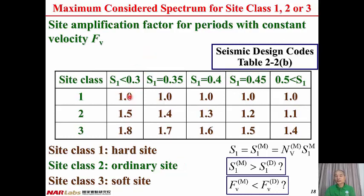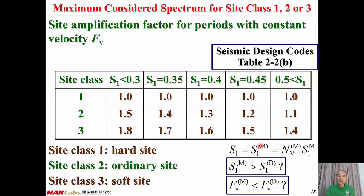From seismic design code Table 2-2B, once we have S1 and the site classification, we can find FV, the site amplification factor for periods with constant velocity. S1 for maximum considered earthquake equals S1(M) equals NV(M) times S1M. Once we have S1 and site classification, we can look up the factor FV. The questions: is S1(M) always larger than S1(D)? And is FV(M) always less than FV(D)?